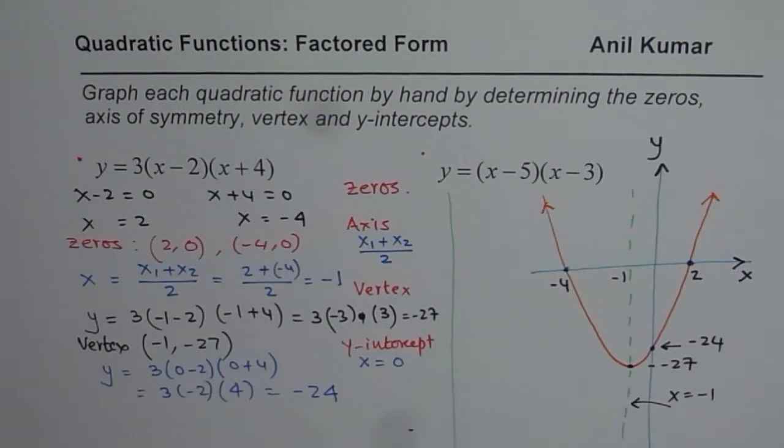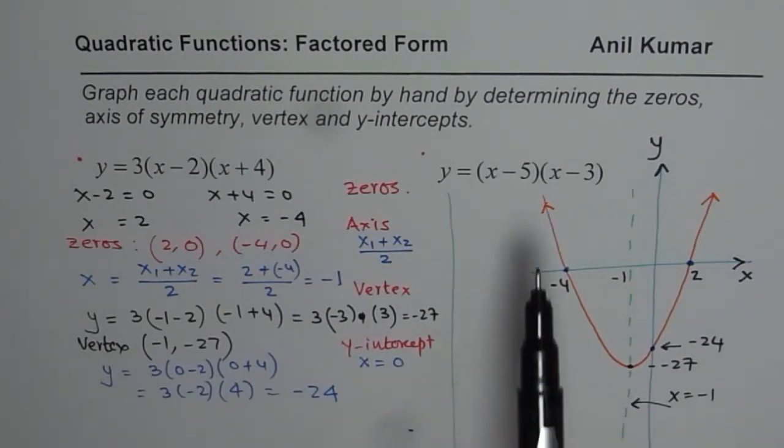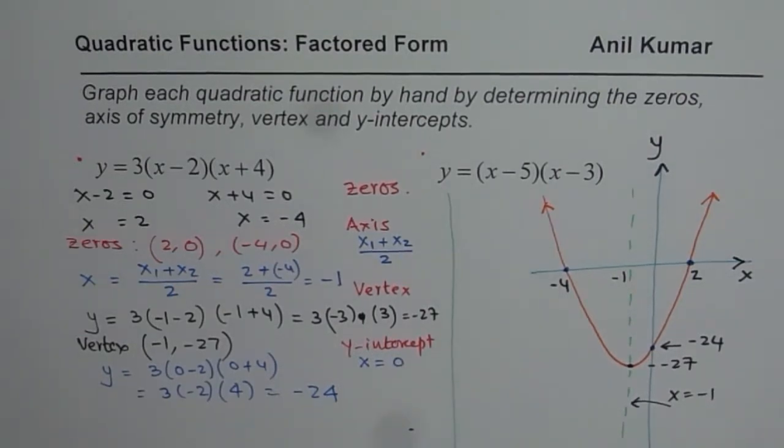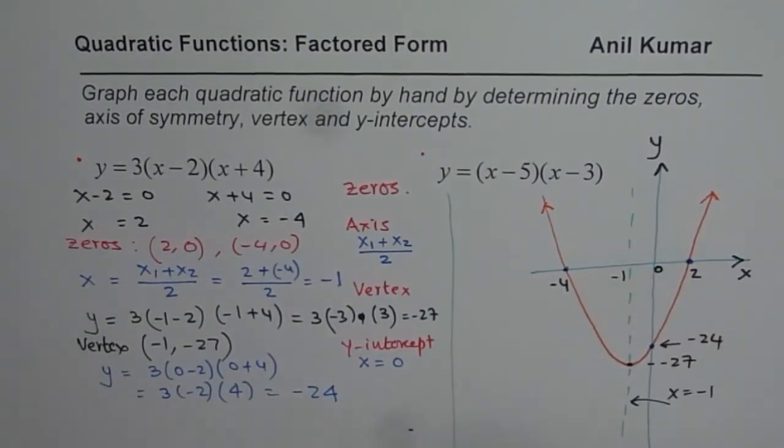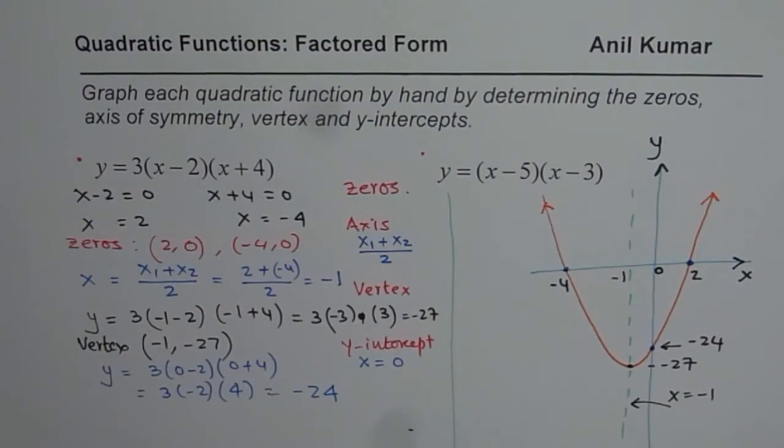Arrows at the end indicate that it extends to infinity. These are the steps to follow to sketch a quadratic function, a parabola from factored form. Follow these steps and do the second part on your own. I hope that will give you good practice. Thank you and all the best.